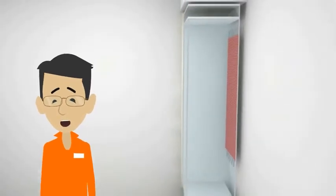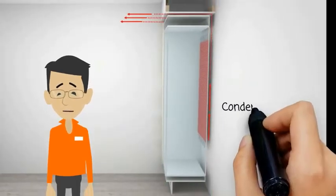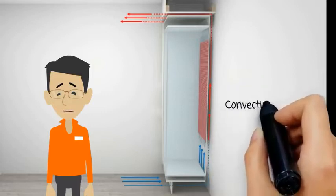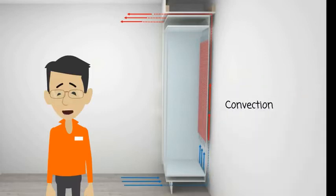Behind the appliance is condenser coils, which heat up and cause the hot air to rise. This is called convection. As the hot air rises, the cool air flows in from the bottom. This causes a natural air flow which is perfect for cooling results.